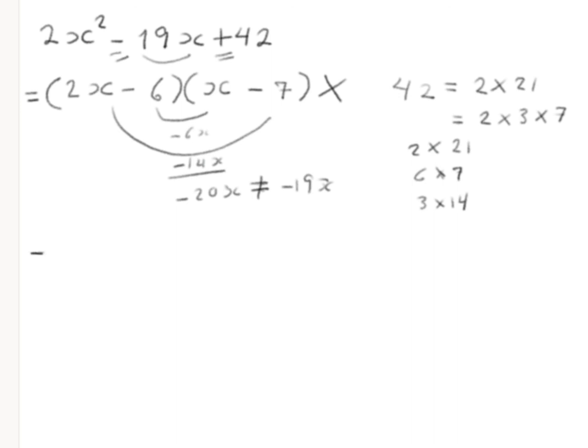So try another one. 2x minus maybe 7, x minus 6. 6 times 2 is 12. Yes. 7. 12 plus 7 is 19. This should be correct.